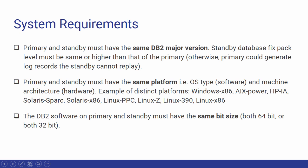The primary and the standby must have the same platform. Both machines will have their own operating system, and both operating systems should be the same, with the same machine architecture. For example, both machines can be Windows, but you cannot have a Windows machine paired with a Linux machine for HDR.